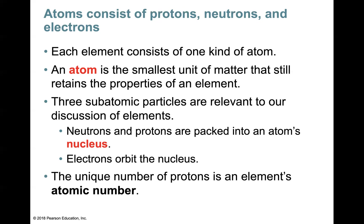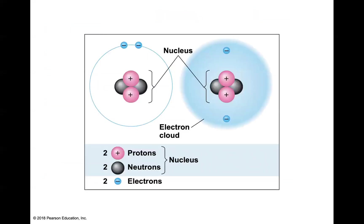We don't expect you to remember every element's atomic number and atomic mass, but we do want you to be able to use the information on the periodic table. When you look at the periodic table and identify an element with an atomic number of six, that automatically tells you something very specific. You can identify an element based on its atomic number, which tells us more about the atomic makeup — specifically the number of protons.